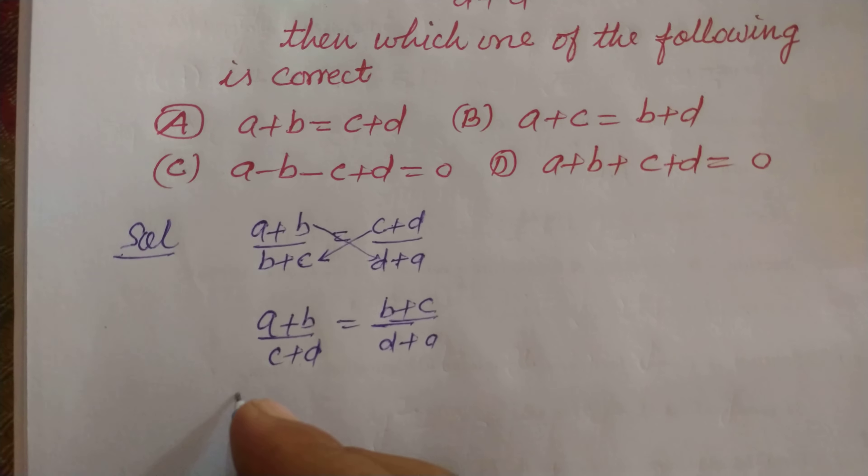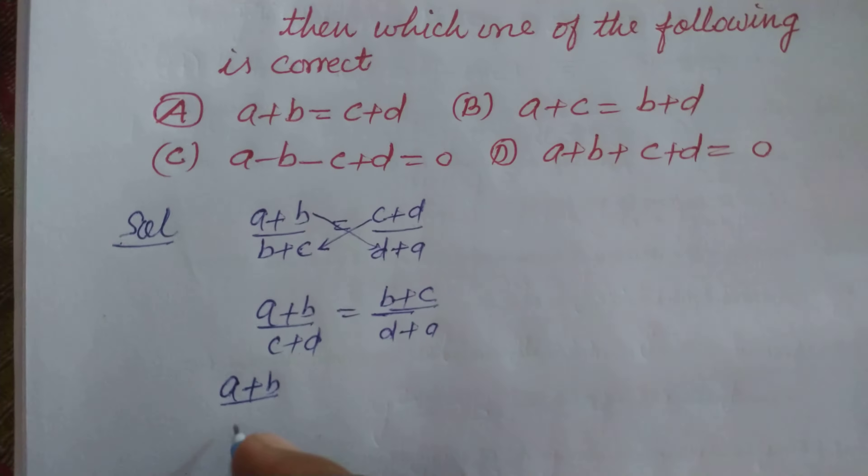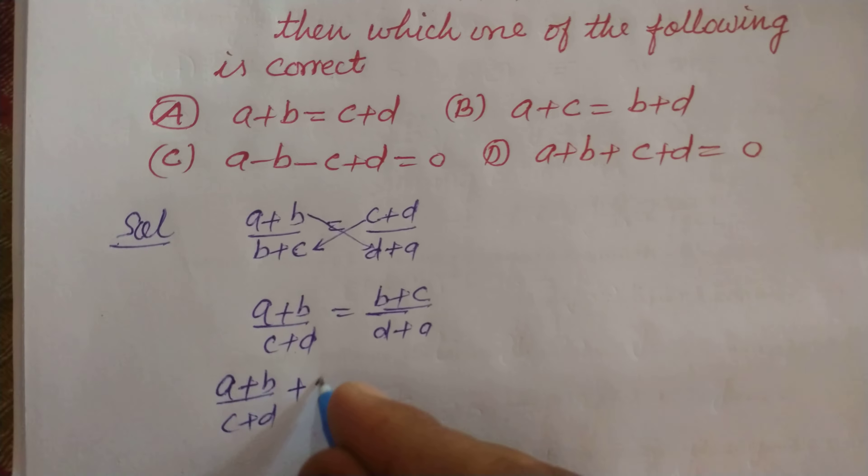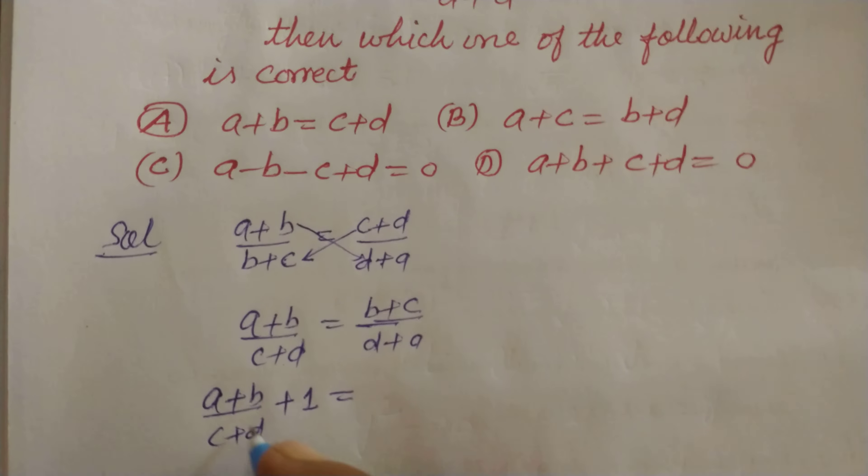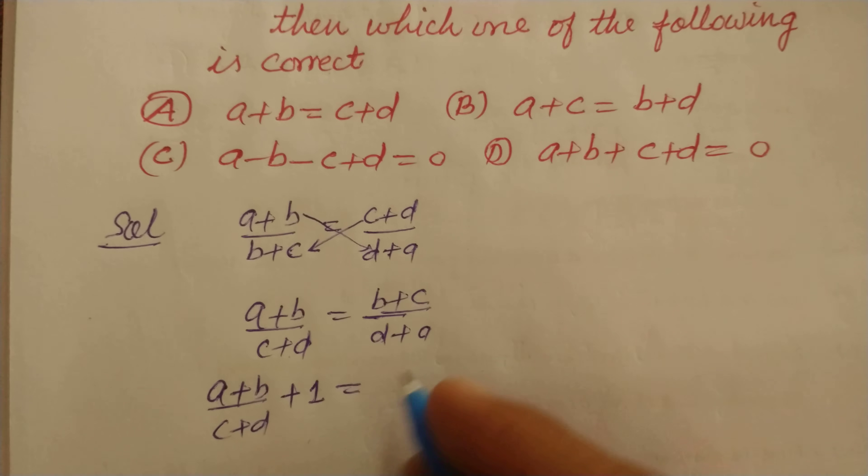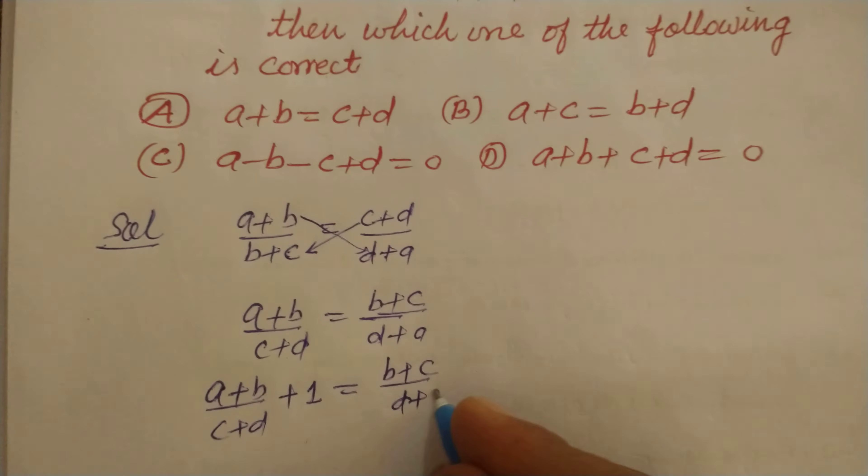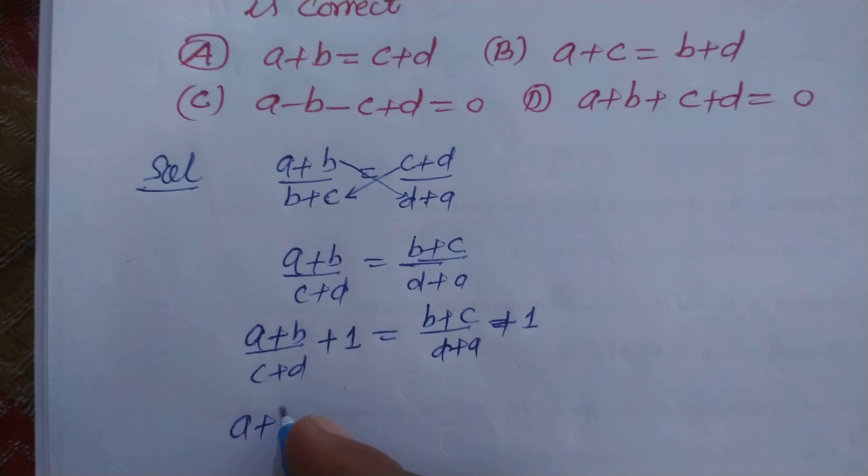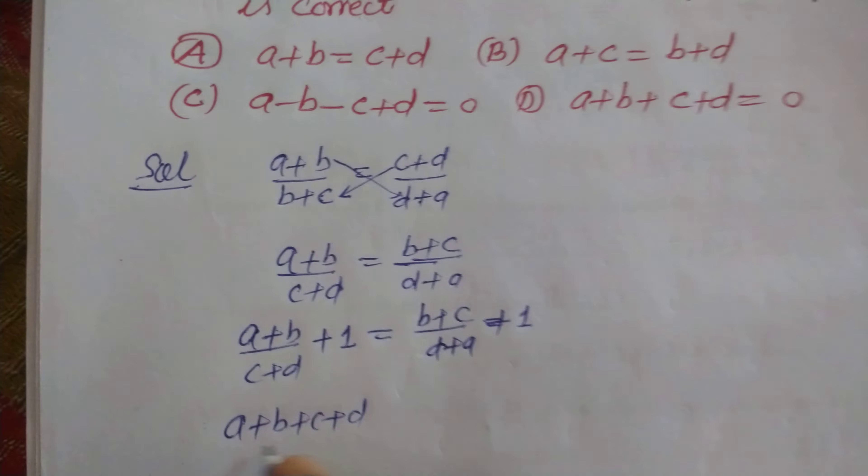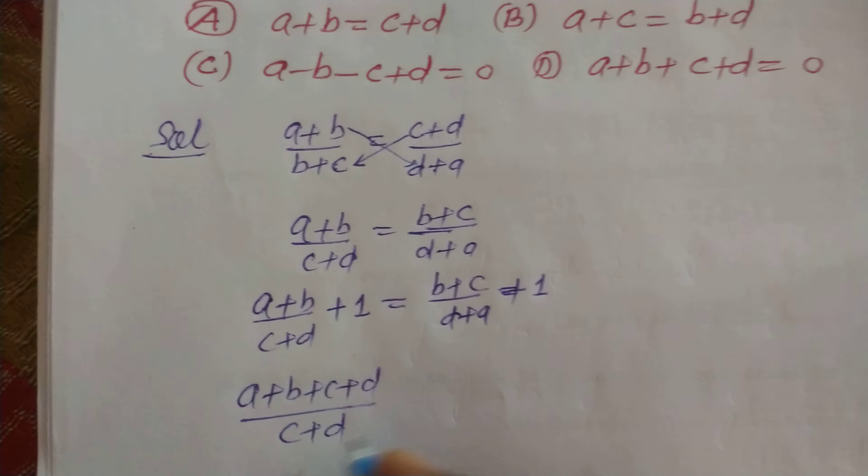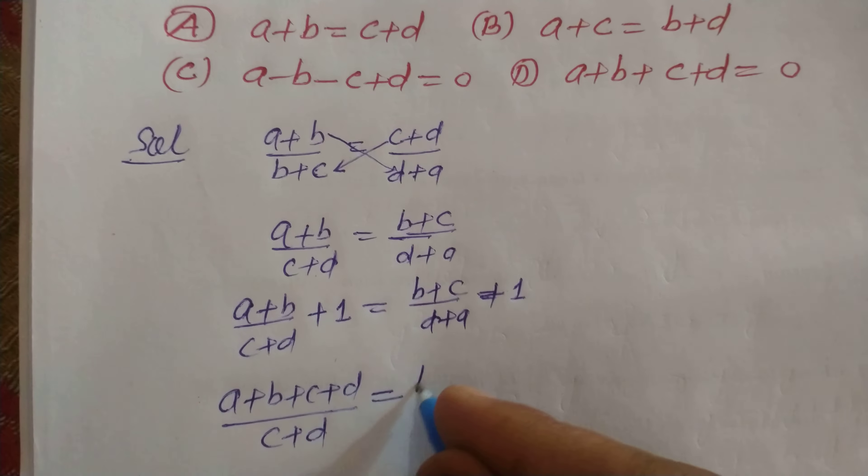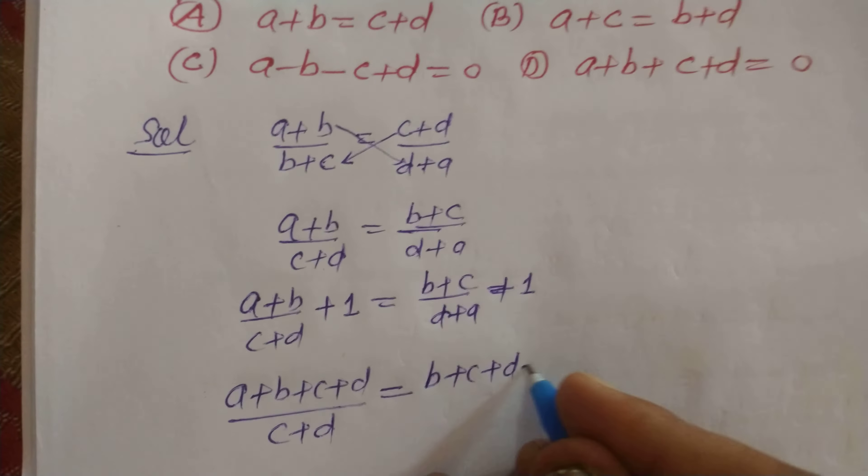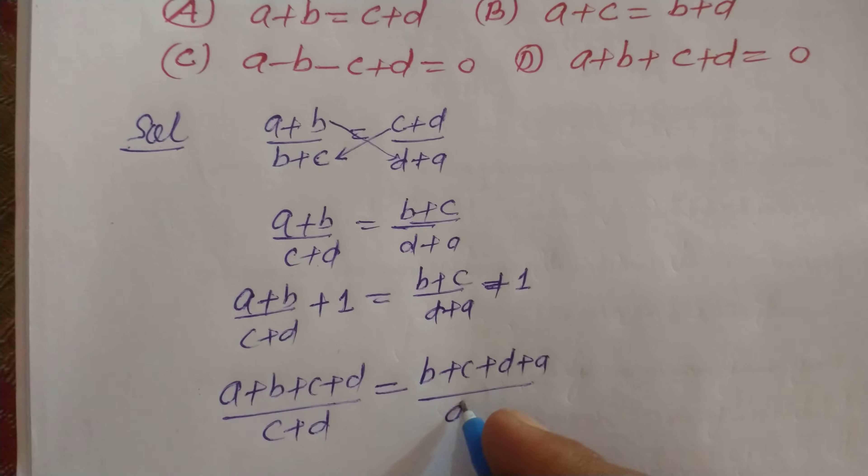Now we add 1 to each side. So (A + B)/(C + D) + 1 = (B + C)/(D + A) + 1. This becomes (A + B + C + D)/(C + D) = (B + C + D + A)/(D + A).